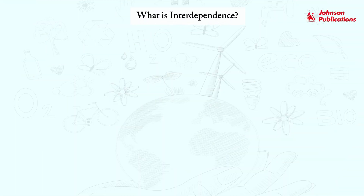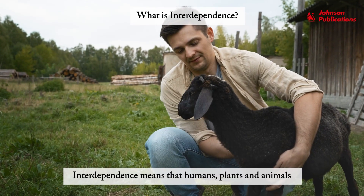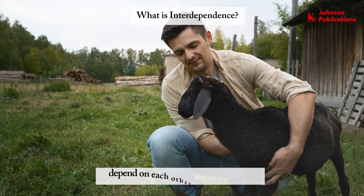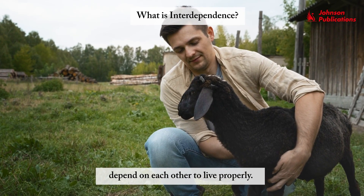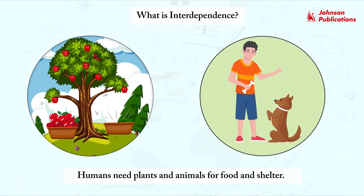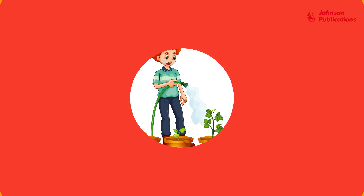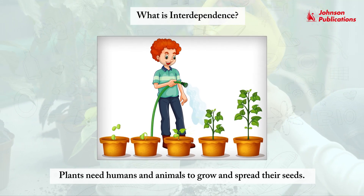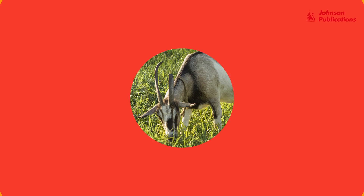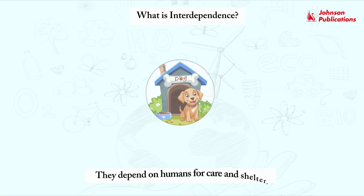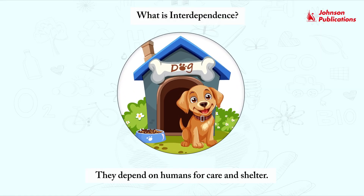Interdependence. What is interdependence? Interdependence means that humans, plants and animals depend on each other to live properly. Humans need plants and animals for food and shelter. Plants need humans and animals to grow and spread their seeds. Animals depend on plants for food, and they depend on humans for care and shelter.